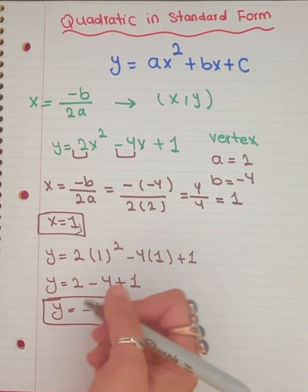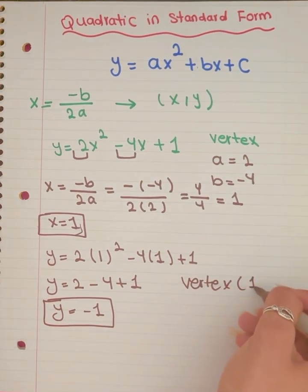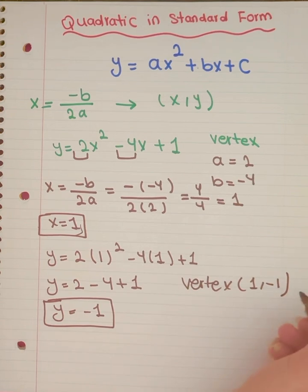So we have our x, we have our y. So the vertex is going to be 1 and negative 1. And this is how you find the vertex in the standard form of a quadratic. Thank you for watching.